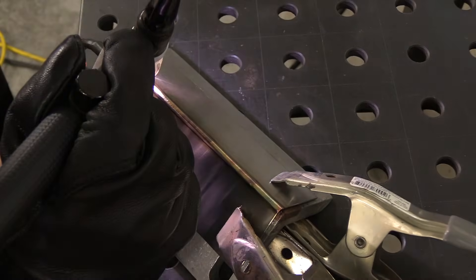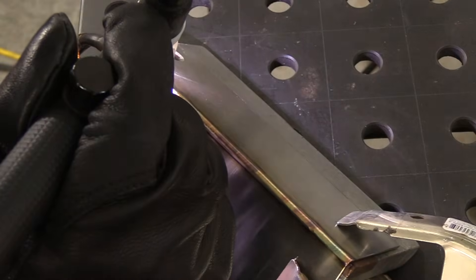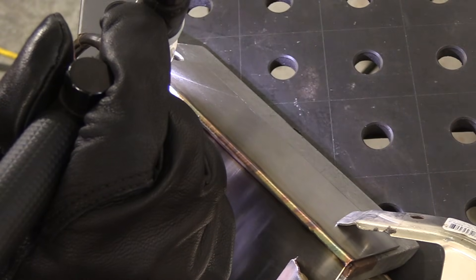I've got a tack weld every three inches or so. You need a really good tight fit up if you're doing an outside corner joint without filler metal. In fact, even when you're doing it without filler metal it's good to have a filler metal in your hand just in case a hole opens up.